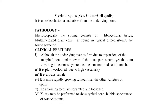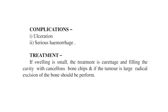Clinical features of myeloid epilis: the underlying mass is firm due to expansion of the marginal bone, yet the gum covering it becomes hyperemic, edematous, and soft to touch. It is plum-colored due to high vascularity, always sessile, and more rapidly growing than other varieties. The adjacent teeth are separated and loosened. X-ray shows a typical soap-bubble appearance of osteoclastoma.